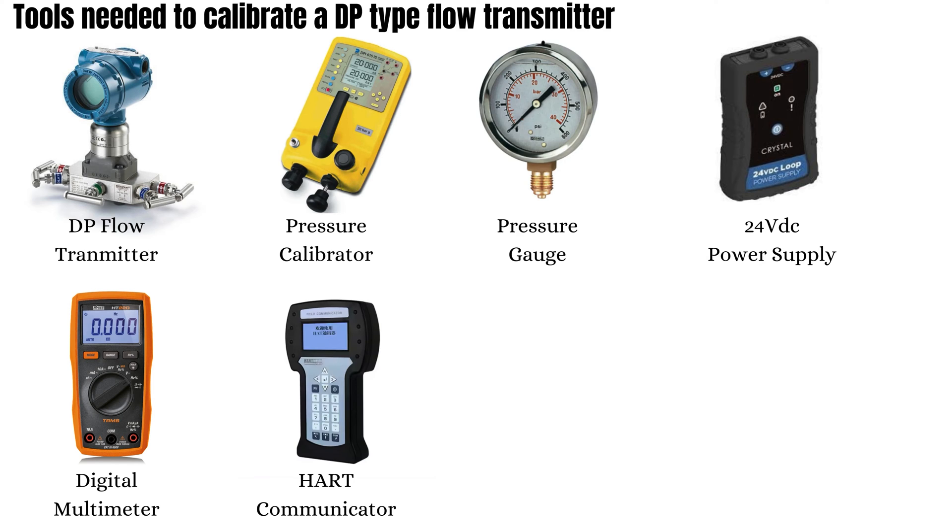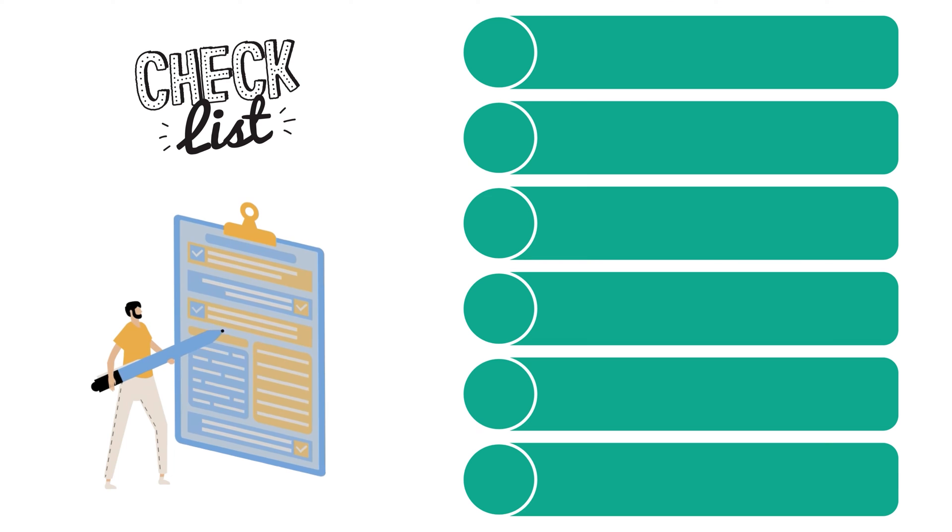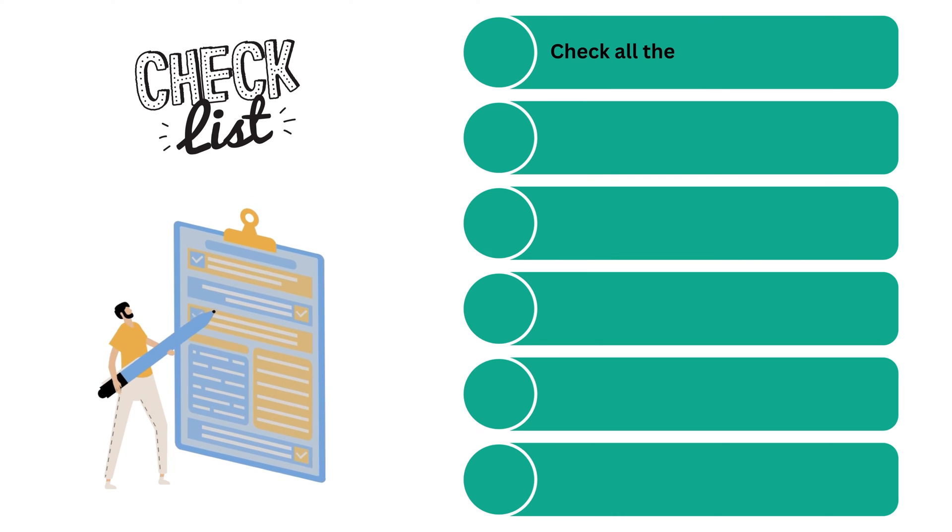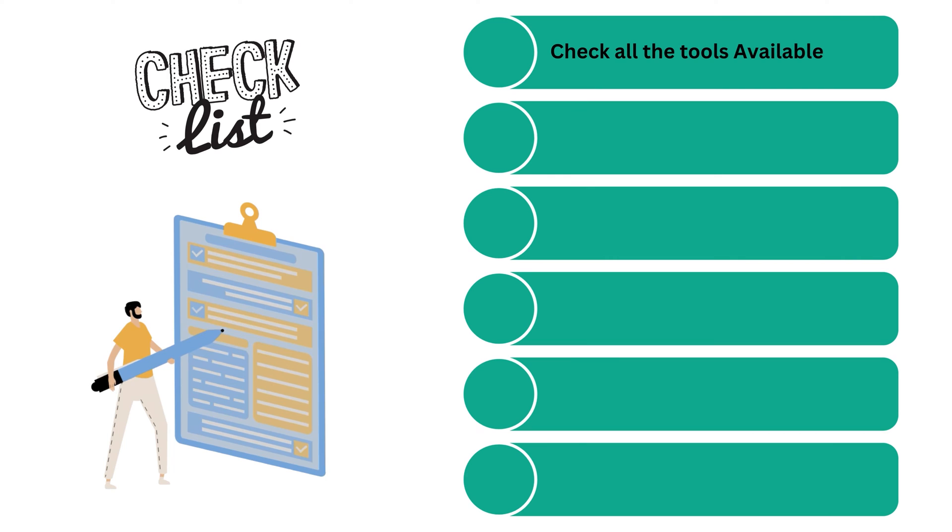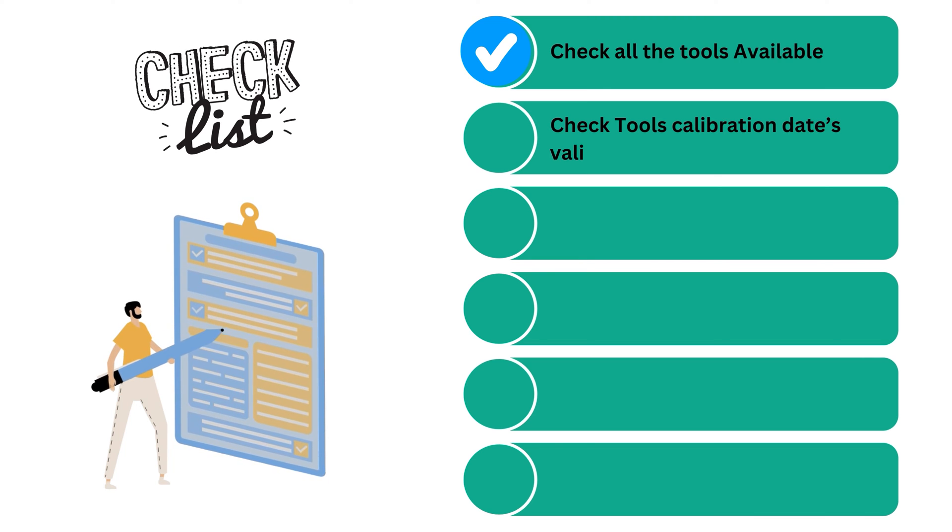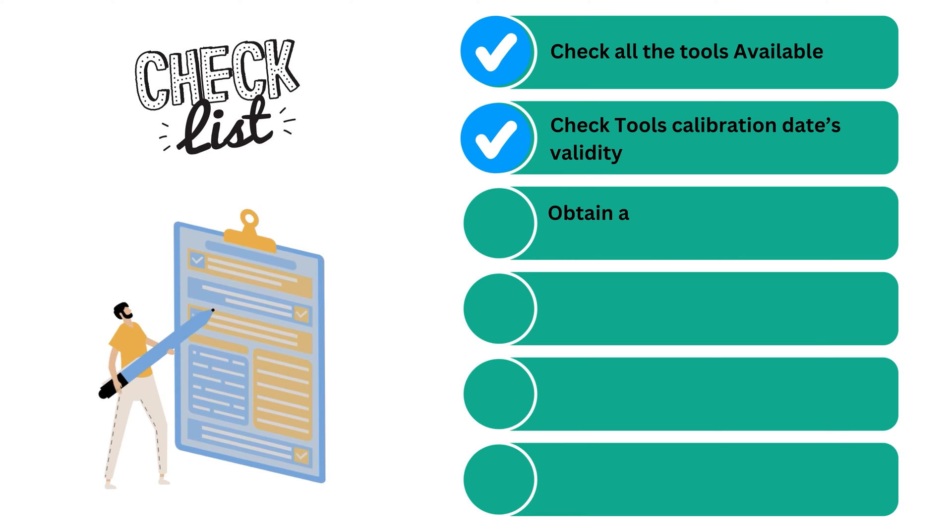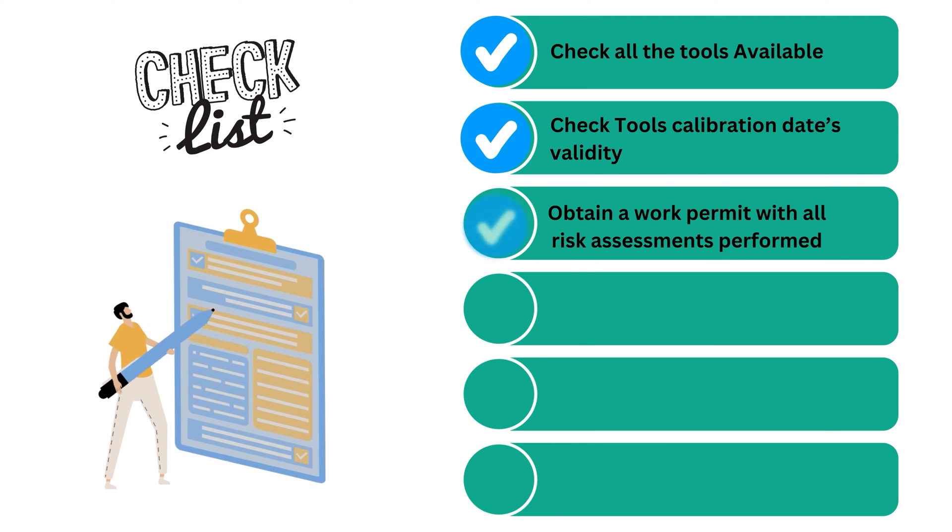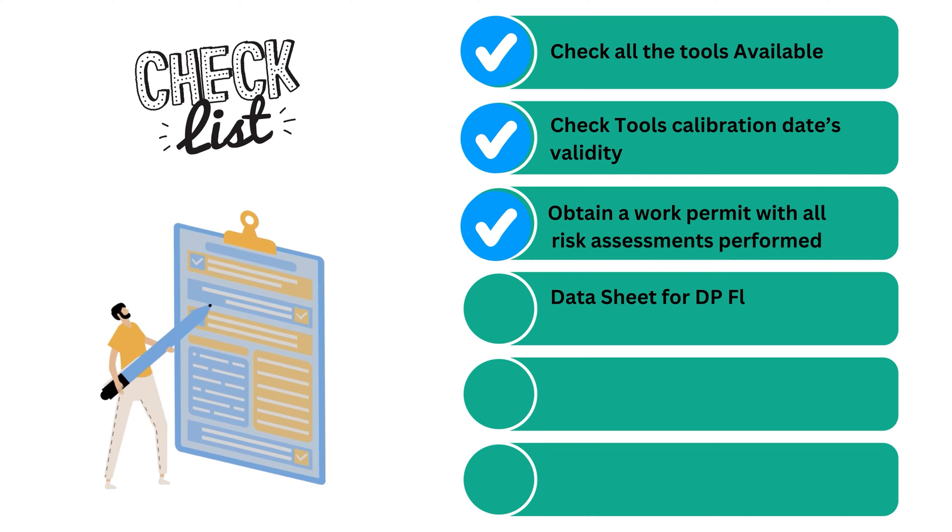Some important checklist to consider before starting the calibration of a DP type flow transmitter: check all the tools available, check tools calibration dates validity, obtain a work permit with all risk assessments performed, and ensure datasheet for DP flow transmitter is available.